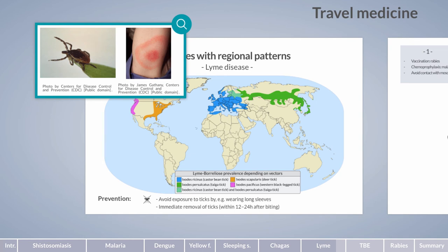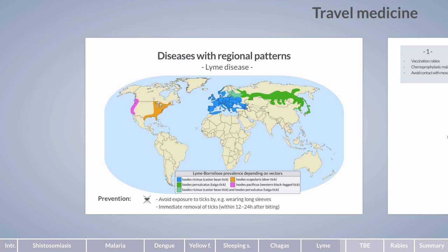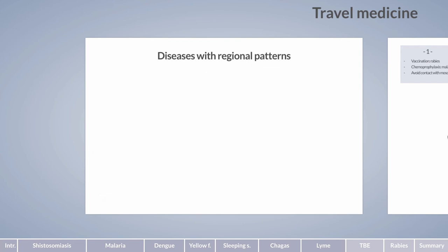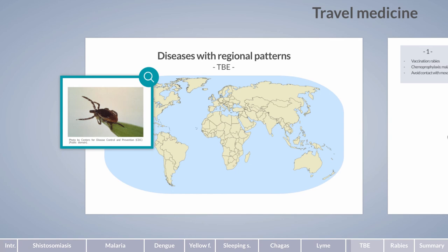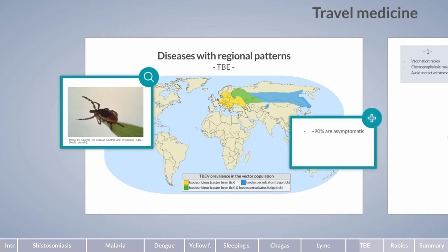Close observation of the bite site is advised, as the presence of classical erythema migrans may indicate infection — though not all cases present with erythema. Lyme disease can be treated with antibiotics, with early treatment yielding the highest success rates. Another viral infectious disease in the northern hemisphere is tick-borne encephalitis (TBE), caused by tick-borne encephalitis virus (TBEV). Infection rates are highest during summer. Approximately 90 percent of infections remain asymptomatic, but the remaining 10 percent initially show flu-like symptoms and fever.